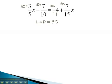Again, these 30s will divide out with the denominators. 30 over 5 is 6, 30 over 10 is 3, 30 over 15 is 2.